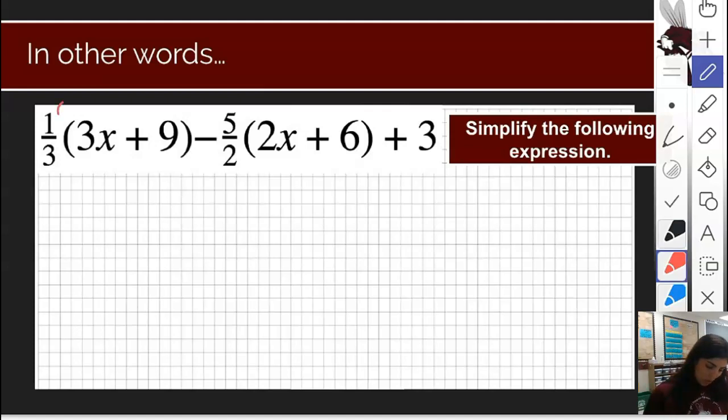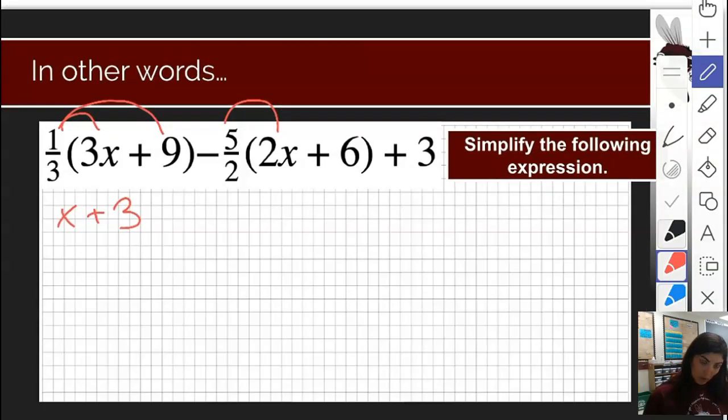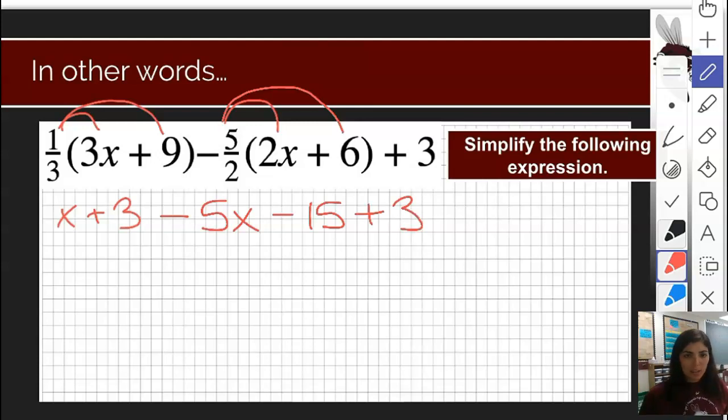So we would distribute for both the first set of parentheses. One third times three is simply one x plus three, and then distribute again, negative five halves times two x is going to be negative five x, and negative five halves times six is going to be negative 15. Bring down the plus three, which didn't have any distribution. Immediately, the problem looks a lot simpler.